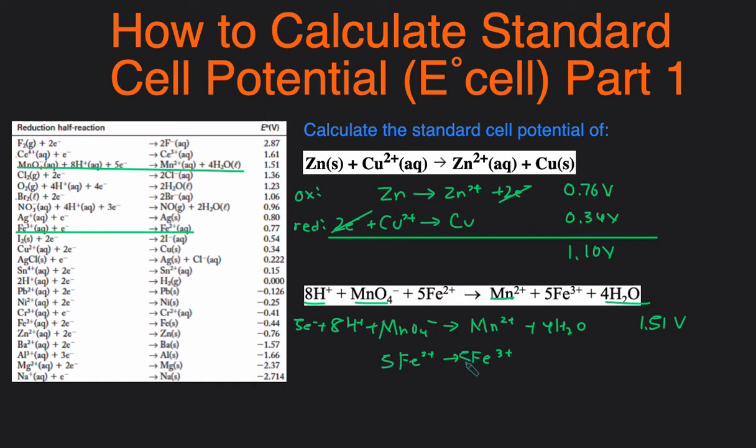There are a couple things that are different. First of all, the Fe³⁺ is on the left hand side. But for us, the Fe³⁺ is on the right hand side. So that means we're going to have to flip the voltage, making it negative 0.77 volts.